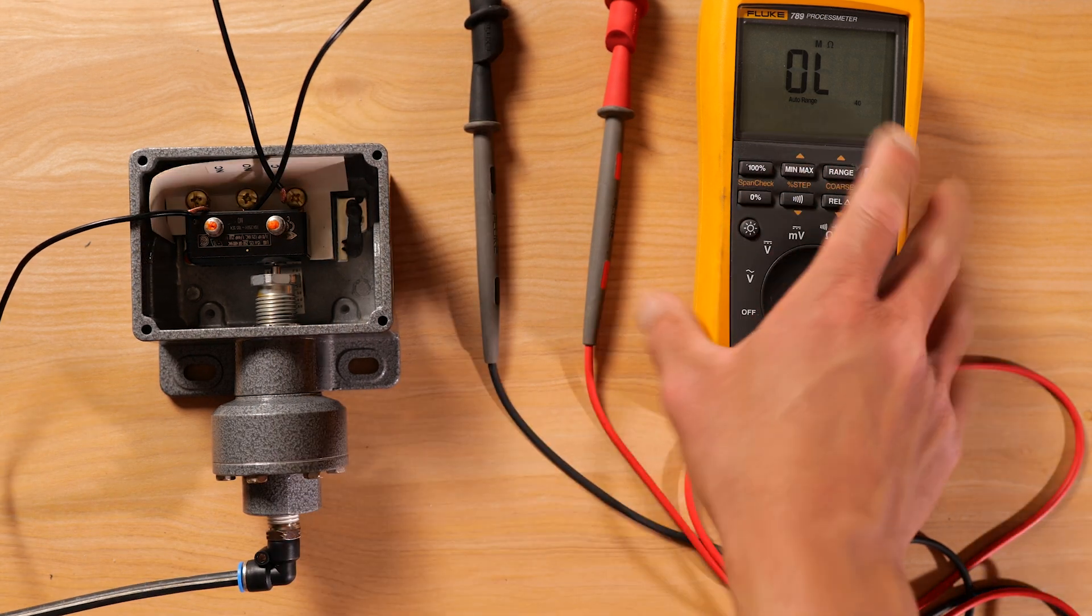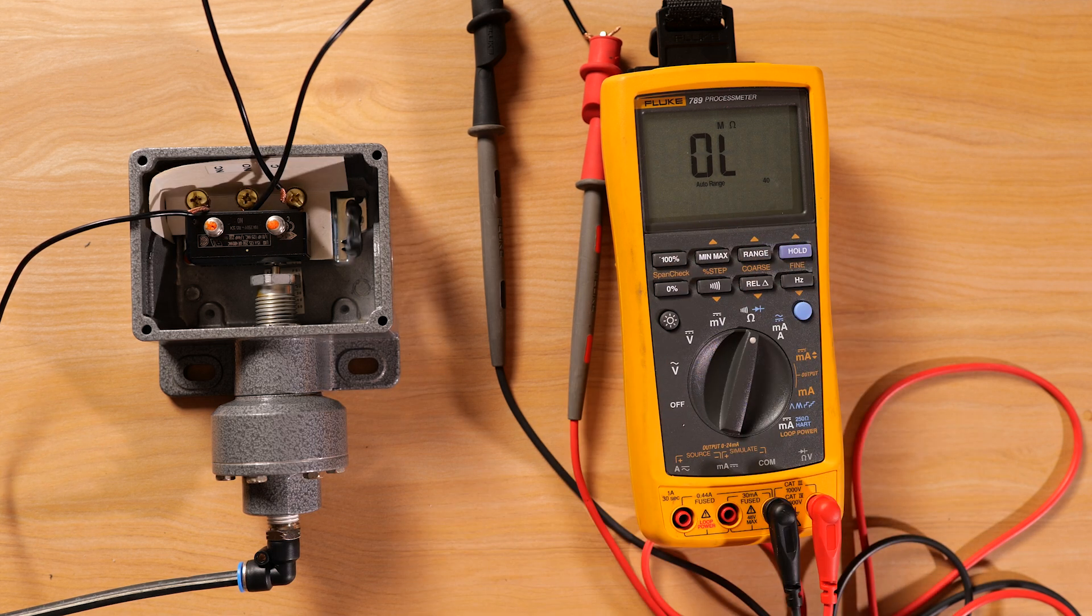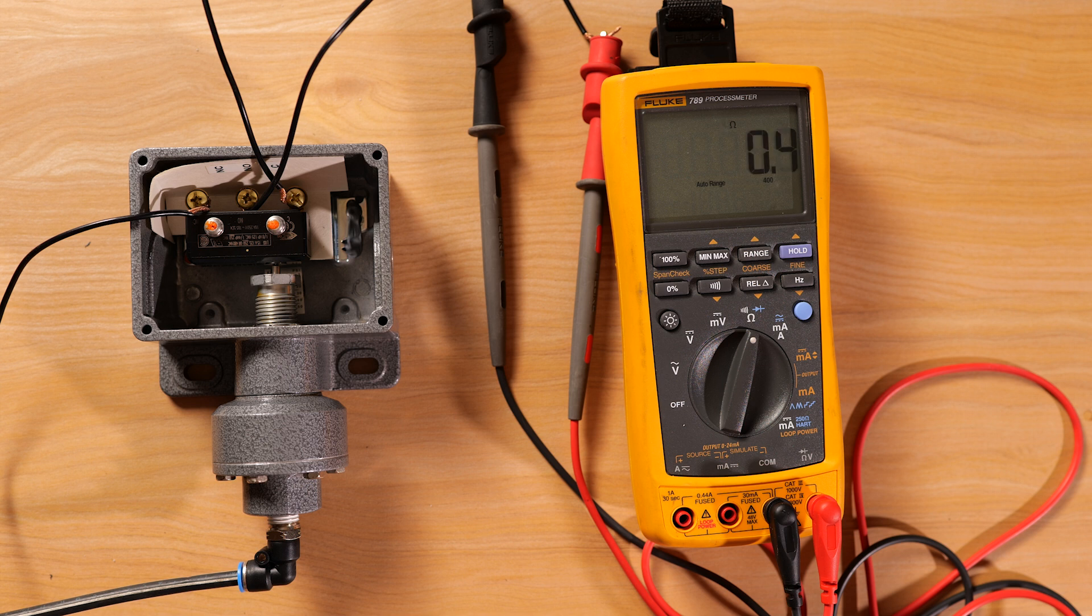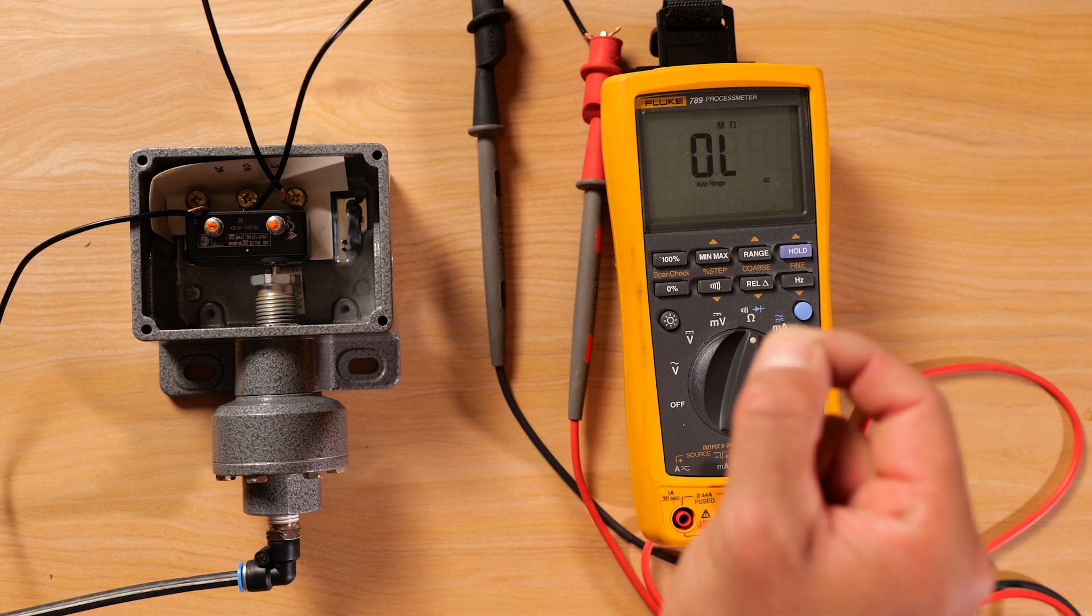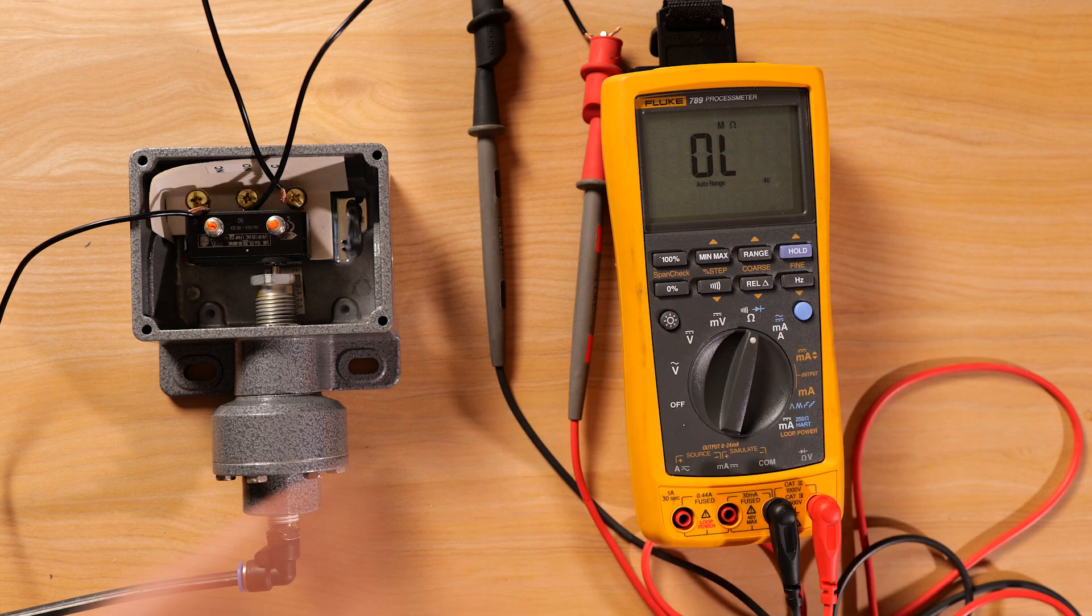So right now we're showing OL, no continuity, but whenever we have pressure applied, we're seeing that reading, ohm reading, turn on and turn off, right? So close and then open.